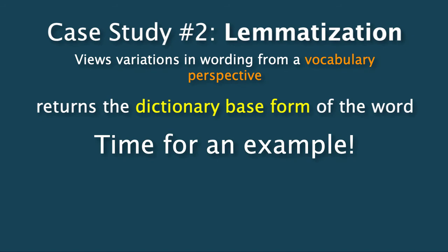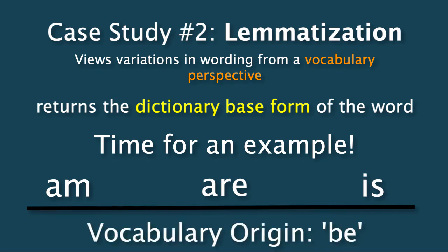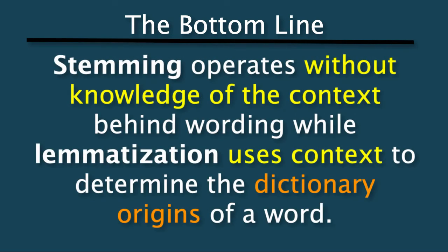For instance, take these three words: 'am,' 'are,' and 'is.' Instead of chopping off the endings, lemmatization finds the vocabulary and morphological common origins of the words and narrows it all down to the word 'be.' The bottom line is this: stemming operates without any knowledge of the context behind wording, while lemmatization actually uses this context to determine the dictionary origins of a given word.